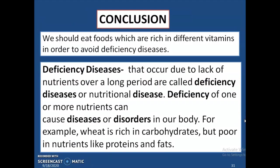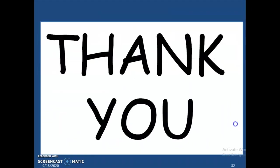In conclusion, we should eat foods rich in different vitamins in order to avoid deficiency diseases. Vitamins have a protective function in our body and are known as protective food. Deficiency diseases are diseases that occur due to lack of nutrients over a long period. Deficiency of one or more nutrients can cause diseases or disorders. For example, wheat is rich in carbohydrates but poor in proteins, so we should have a balanced diet, take vitamin-rich food regularly, and visit a doctor for recommendations.